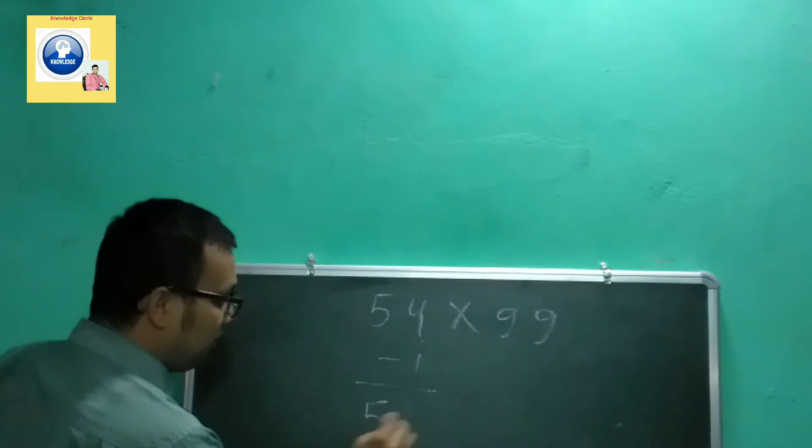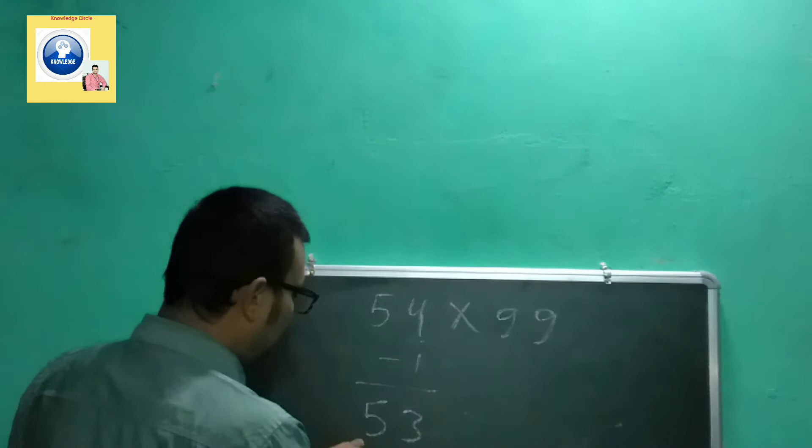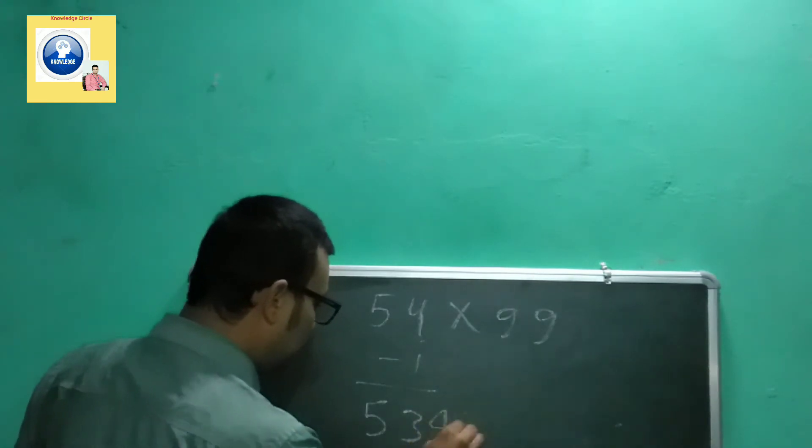Subtract 1 to get 53. What you have to do is 9 minus 5, which is 4, and 9 minus 3, which is 6.